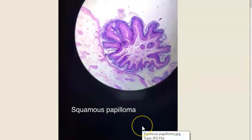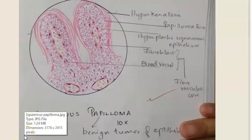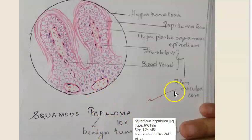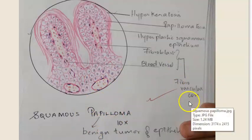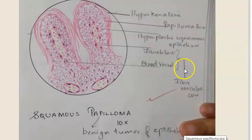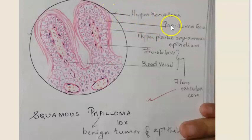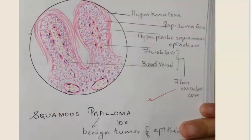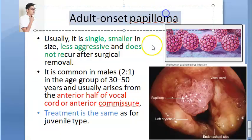Now let us look at some histopathology images from the path lab. Squamous papilloma is a benign tumor of the epithelium. Histology shows hyperkeratosis, papillomatosis, hyperplastic squamous epithelium with fibroblasts and blood vessels — the papilloma has a characteristic fibrovascular core.